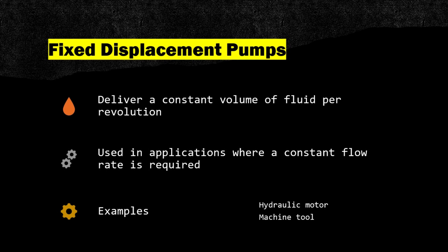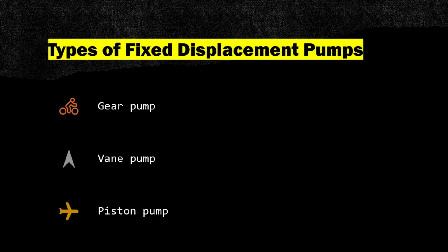Examples of fixed displacement pump applications include hydraulic motors and machine tools. Types of fixed displacement pumps include gear pumps, vane pumps, and piston pumps.